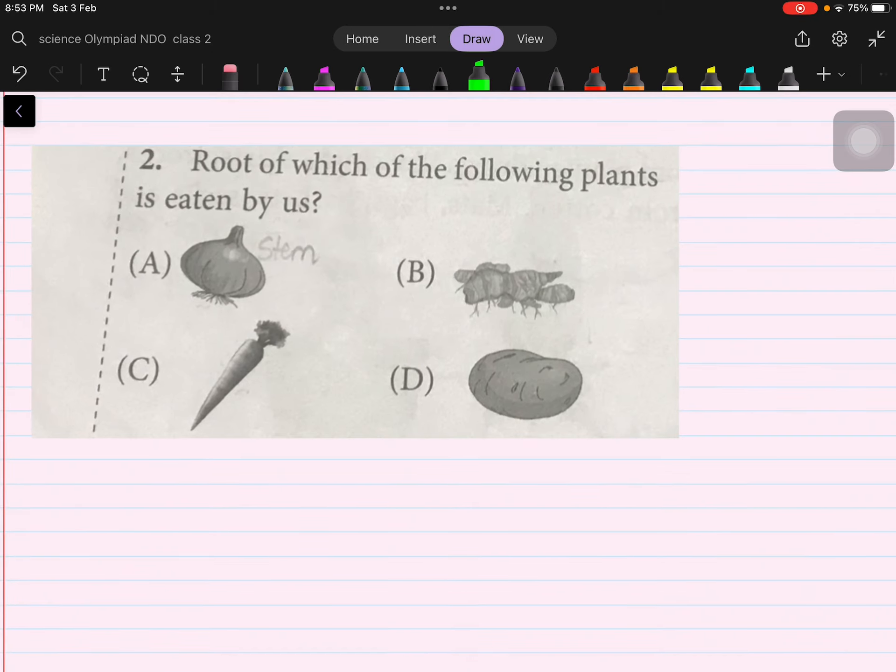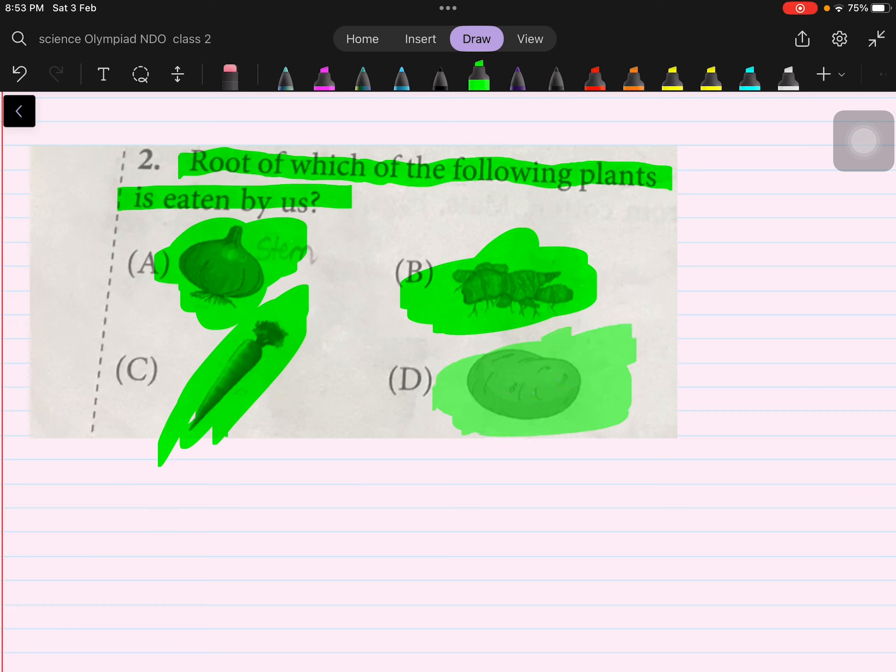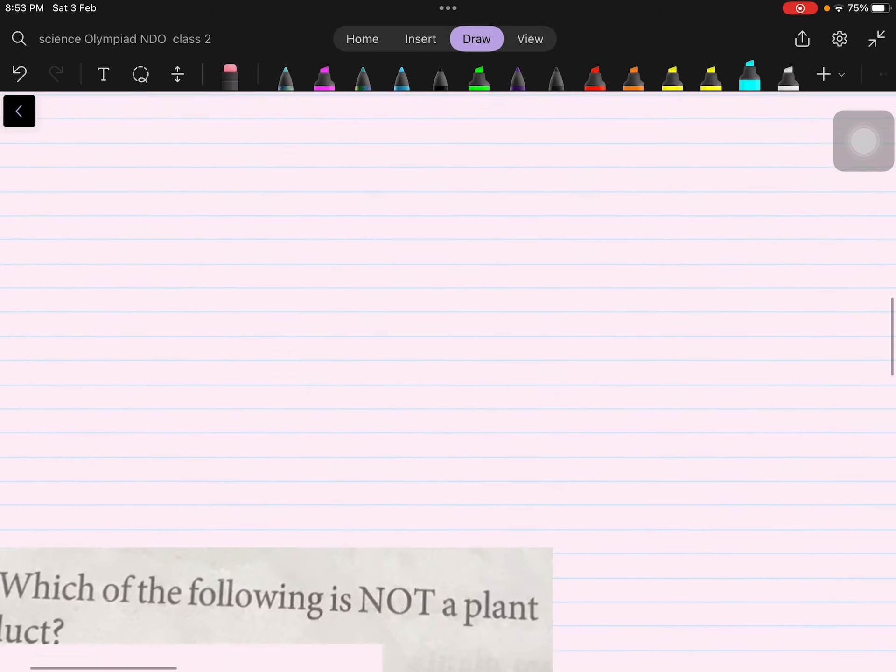Root of which of the following plants is eaten by us? Let's see. This is a potato. Sorry, an onion. This is ginger. Carrot and a potato. So which is a root? Carrot. What will we bubble? C.